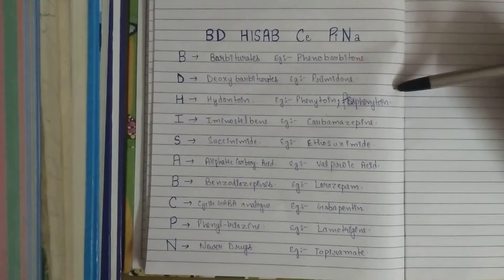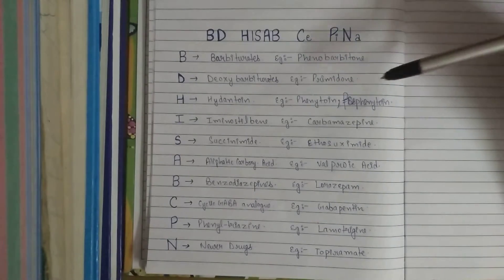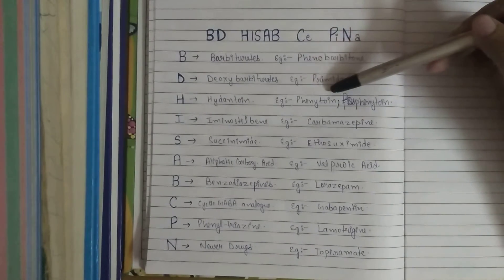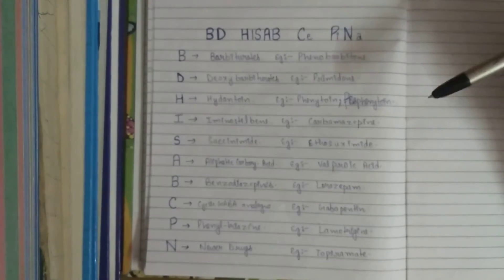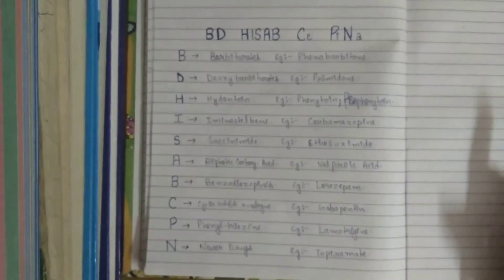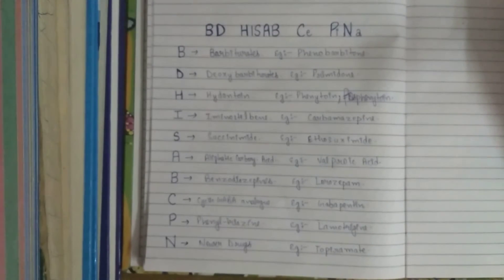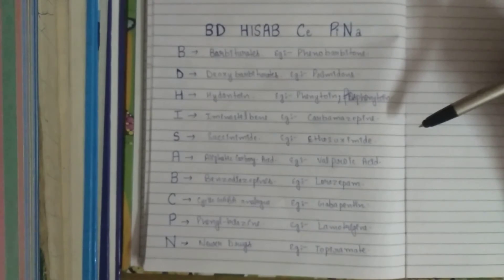The first point is for phenytoin. Phenytoin itself is not commonly used because of some serious side effects it can cause, like fetal hydantoin syndrome, megaloblastic anemia, and hirsutism. So in exchange, fosphenytoin, which is its water-soluble congener, is more commonly used. The second important point is for carbamazepine. Carbamazepine is the drug of choice for trigeminal neuralgia and is also first-line treatment for grand mal epilepsy, also known as major epilepsy.